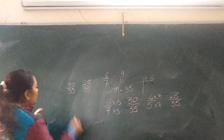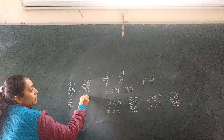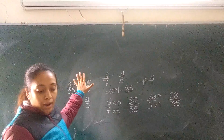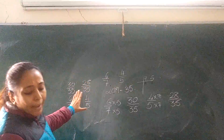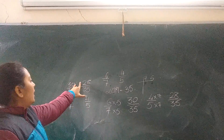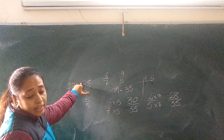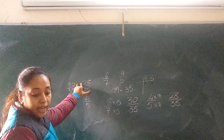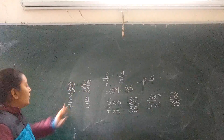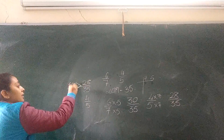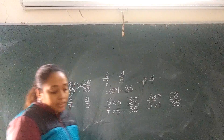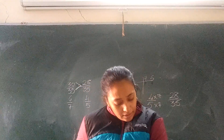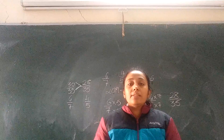So 6 upon 7 becomes 30 upon 35, and 4 upon 5 becomes 28 upon 35. Now if you compare the numerators, that is 30 and 28, so 30 is greater than 28. So 30 upon 35 is greater than 28 upon 35, meaning Akbar's performance was better.